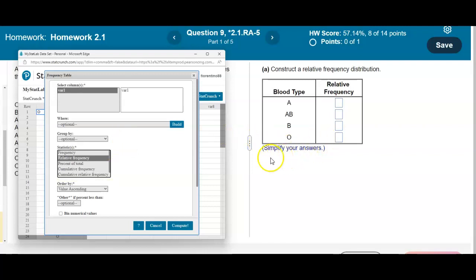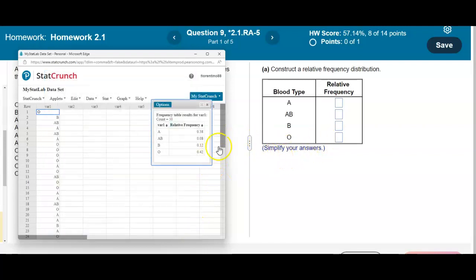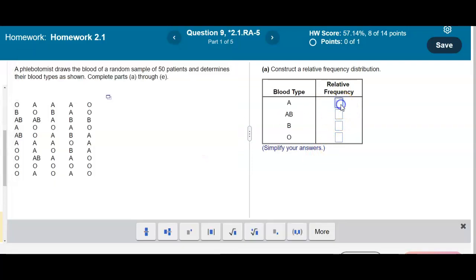And so here we have a relative frequency. It doesn't ask us to put in a percent, we're just going to put it in the decimal. So we have 0.38, 0.08.